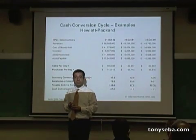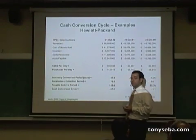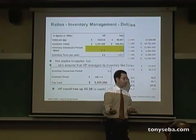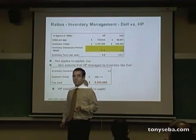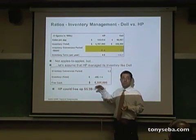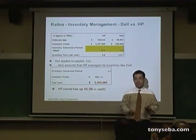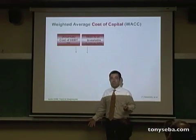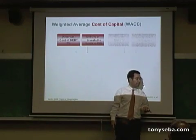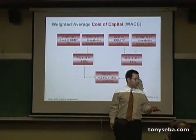We looked at companies and how they use these ratios, and how HP manages its cash versus Dell. If HP managed cash like Dell, they would have an extra five billion dollars. Is that significant? Five billion here, a billion there — pretty soon it's real money. But there's nothing wrong with that because it all comes from the corporate strategy. We also briefly looked at weighted average cost of capital and all its components.